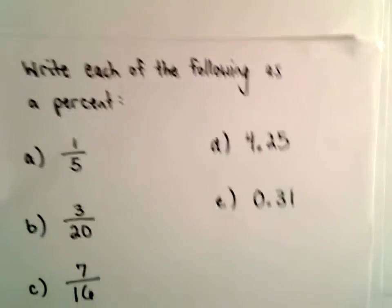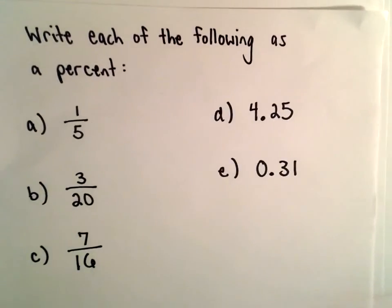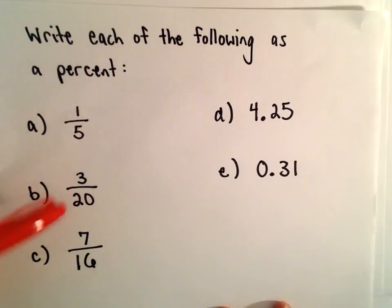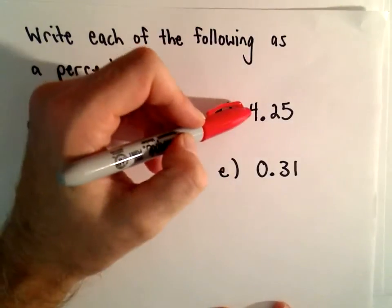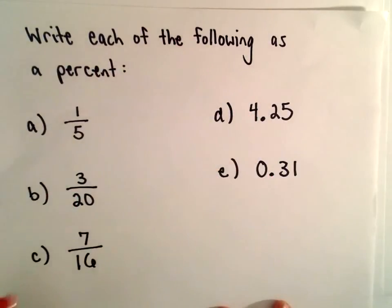Okay, in this video we're going to look at five different examples of writing numbers as a percentage. We've got one fifth, three over twenty, seven over sixteen, four point two five, and zero point three one.